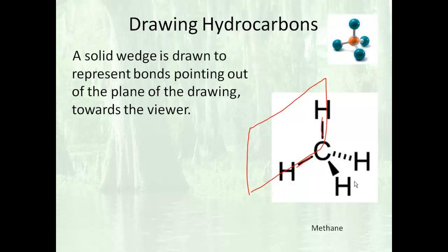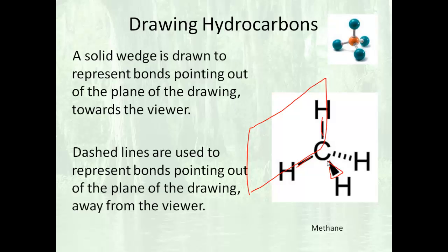A solid wedge is used to denote the atom is coming towards the viewer. The dashed lines are used to represent bonds pointing out of the plane away from the viewer. So looking up here, that's away from the viewer, and this is toward the viewer. And this is the plane of the computer.